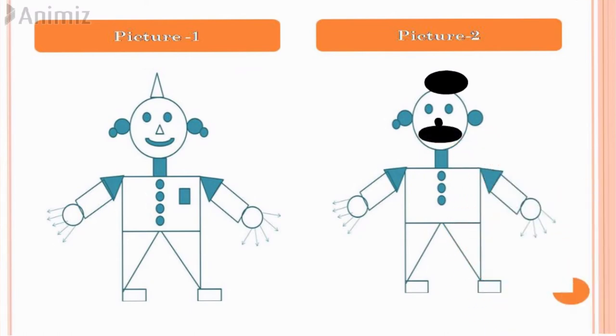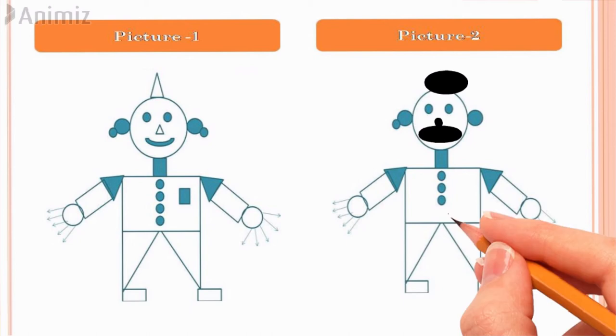Then we find there are four buttons in this picture, but in the second picture there are only three buttons. Let's mark it.